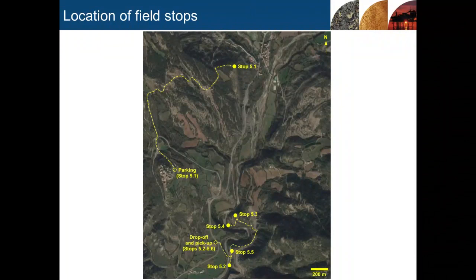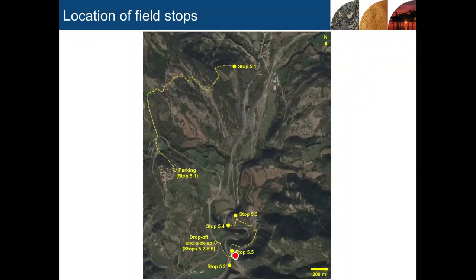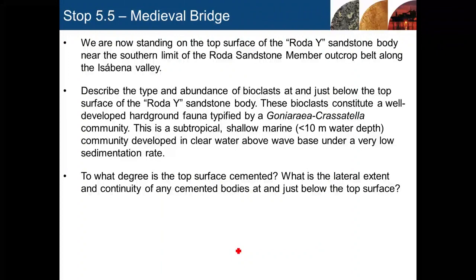We're now going to go to our last outcrop stop of the day before we switch to doing the correlation exercise, and that is stop 5.5. We've basically walked up a path back from stop 5.4, past 5.3, and we're returning almost back to where we started.